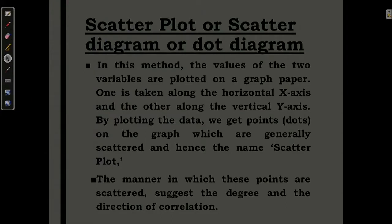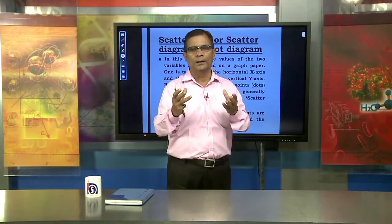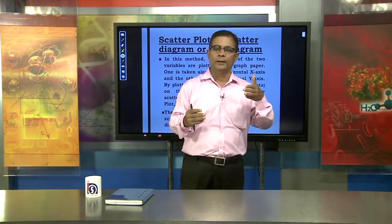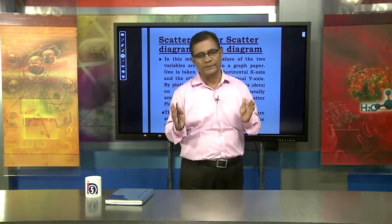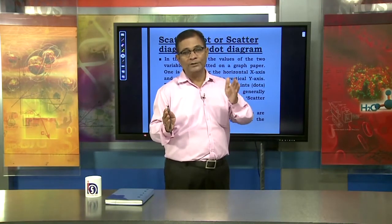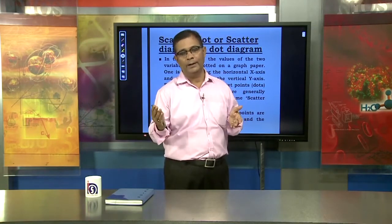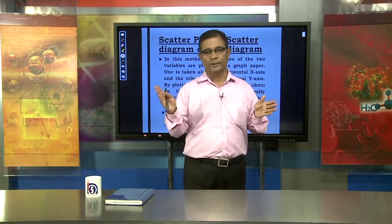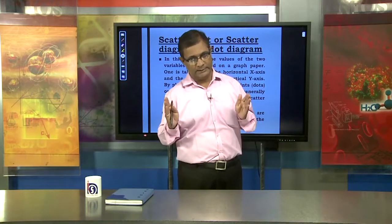When you plot the points, they will cover different areas. The nature of the plotting will differ — some plots will be in a line, some in a round figure or circular shape. Based on those shapes, we can understand the degree and direction of correlation, whether it is high, low, or moderate, and whether there is a positive or negative correlation.